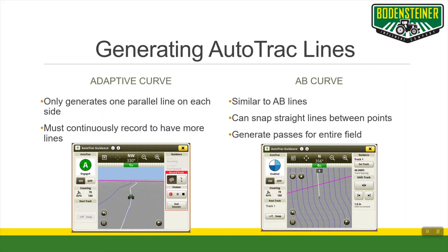This is different than adaptive curve in the way that adaptive curve only generates one parallel line on each side of you. To be able to keep using auto-track across the field, you have to leave record on so that way you can keep recording new passes as you move along.